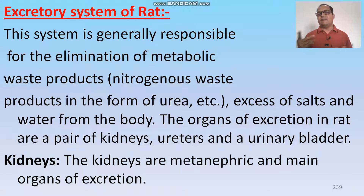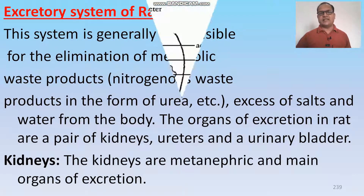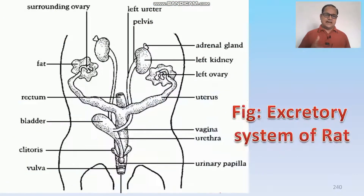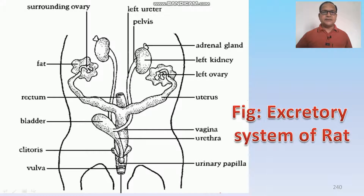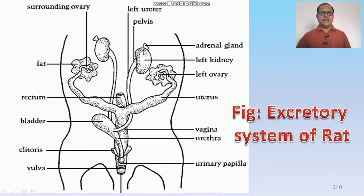Kidneys are metanephric type, the most advanced type, and the main organs of excretion. The two kidneys have adrenal glands at the posterior and anterior end of the kidney. These are the ureters, which are combined to form a urinary bladder, and the urinary opens outside by the urethra.